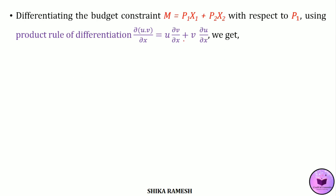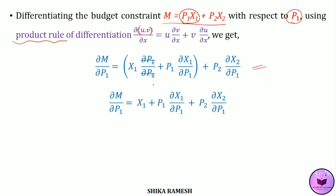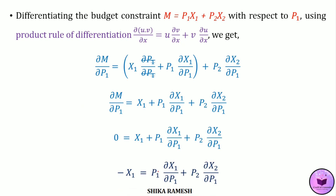Differentiating the budget constraint m = p1·x1 + p2·x2 with respect to p1 using the product rule, we get ∂m/∂p1 = x1·(∂p1/∂p1) + p1·(∂x1/∂p1) + p2·(∂x2/∂p1). Since ∂p1/∂p1 cancels, this simplifies to ∂m/∂p1 = x1 + p1·(∂x1/∂p1) + p2·(∂x2/∂p1). Setting ∂m/∂p1 = 0 and rearranging, we get: −x1 = p1·(∂x1/∂p1) + p2·(∂x2/∂p1).